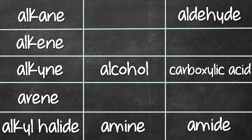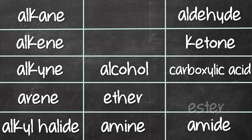And then we move on to our K, 1K ketone, and our 2Es, ether and ester. So these are our 13 groups.